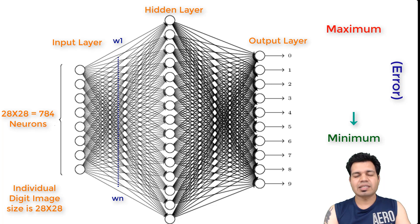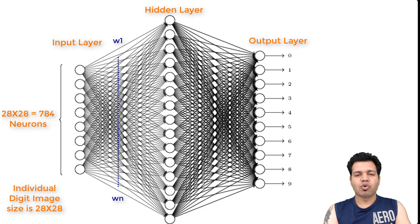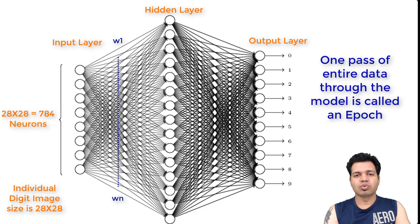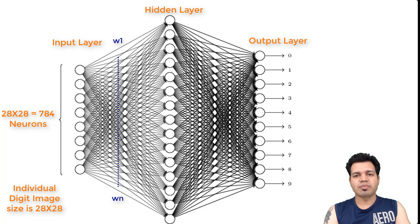What SGD, or Stochastic Gradient Descent, does is try to minimize this error in order to make our neural network model as accurate as possible in its predictions. We pass all of our data through the neural network model, and importantly, we keep passing the same data multiple times through the model. When we pass the same data through the model several times, the model actually learns and gets trained, thereby updating the weights during the entire training process. One pass of the entire data through the model is called an epoch, and running multiple epochs means passing the same data through the network multiple times.